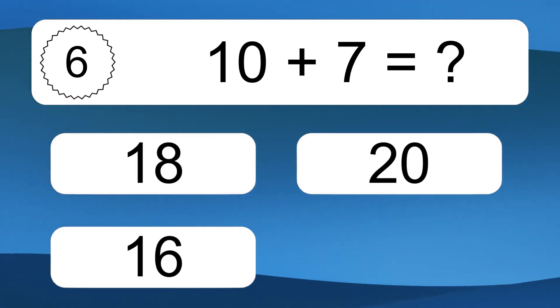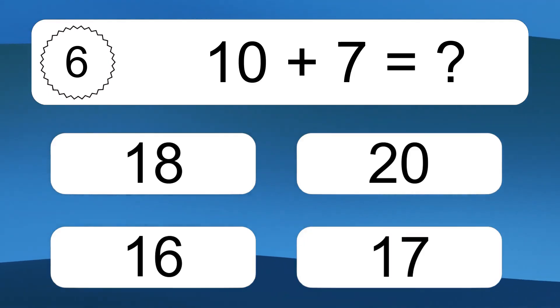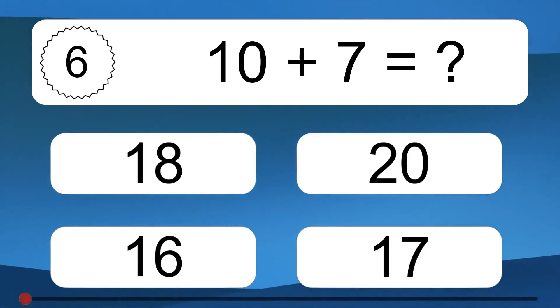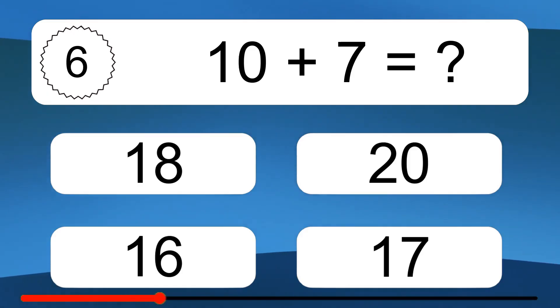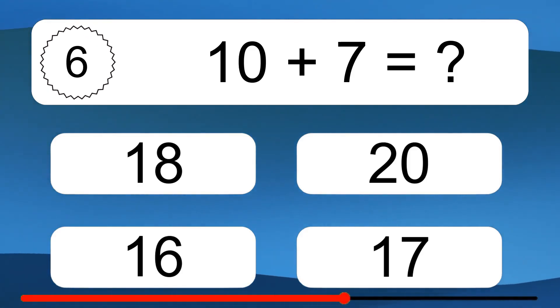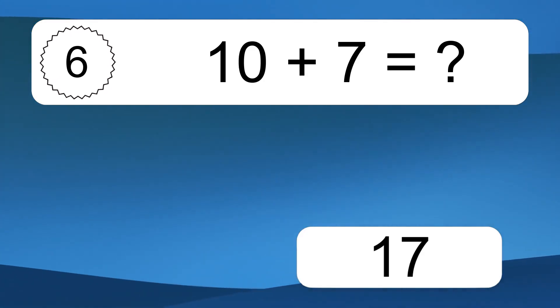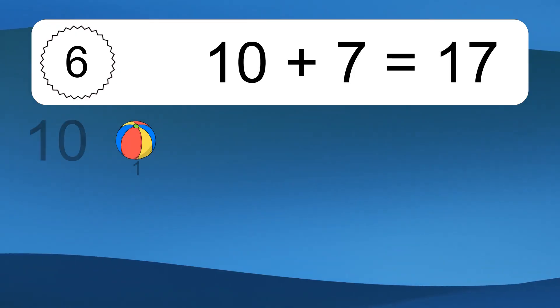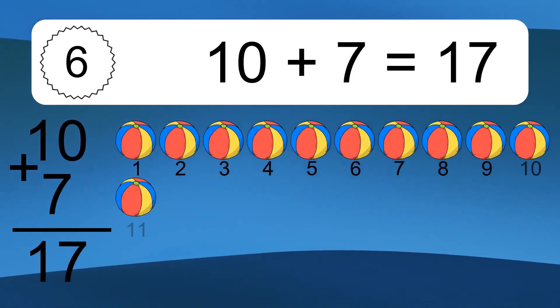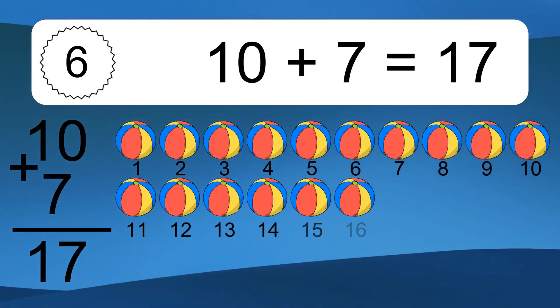10 plus 7 equals what? 10 plus 7 equals 17.